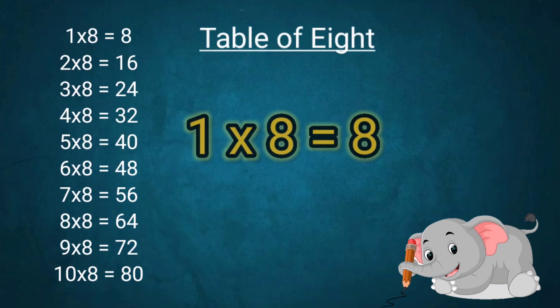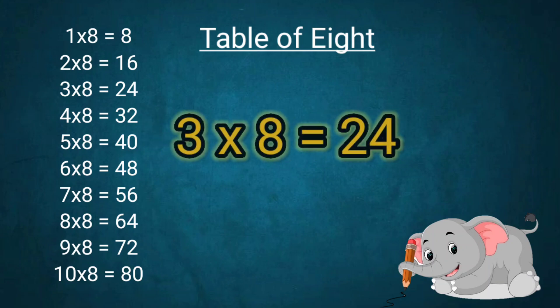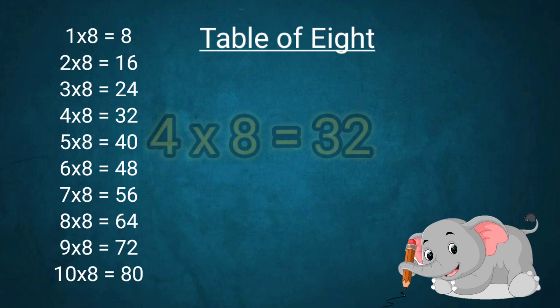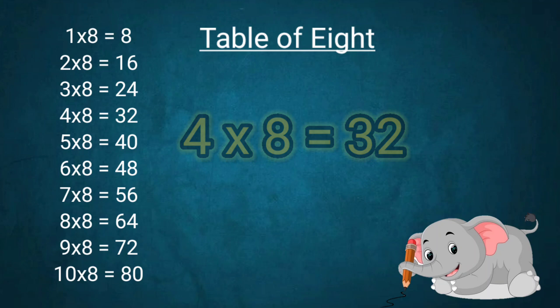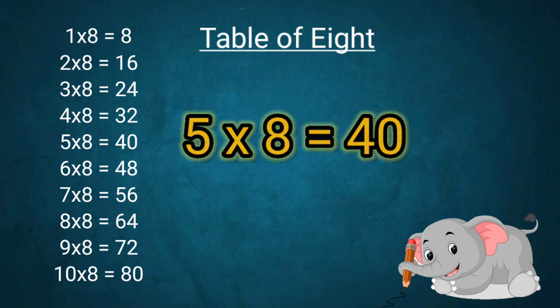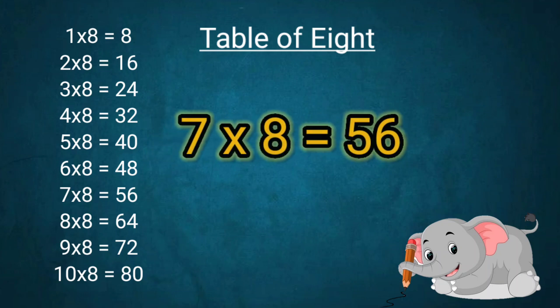Table of 8: 1x8=8, 2x8=16, 3x8=24, 4x8=32, 5x8=40, 6x8=48, 7x8=56.